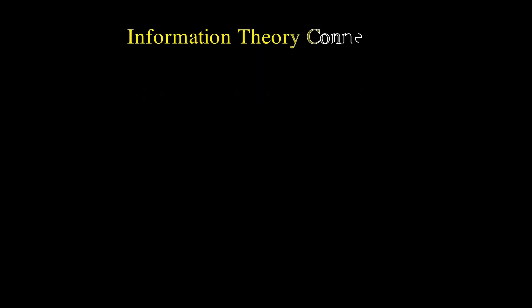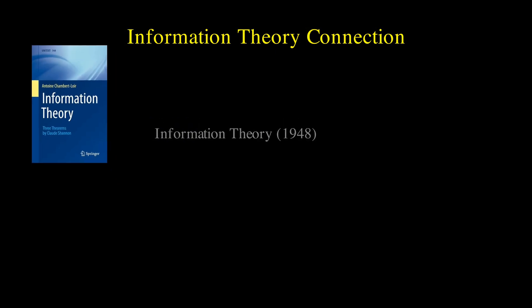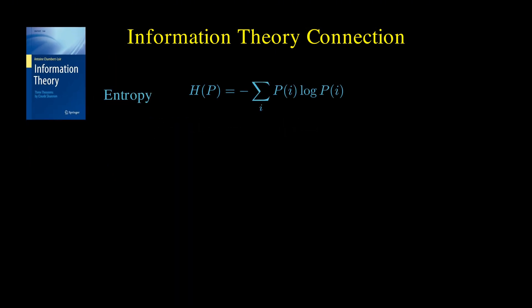Cross-entropy has its roots in information theory, introduced by Claude Shannon in 1948, and it measures uncertainty in probability distributions. You can simply think of it as the average bits needed to encode events from that distribution.